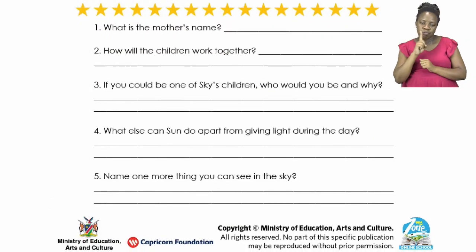Now boys and girls let's look at the questions. Question one: What is mother's name? Number two: How will the children work together? Number three: If you could be one of Skye's children, who would you be and why? Number four: What else can sun do apart from giving light during the day? Number five: Name one more thing you can see in the sky.